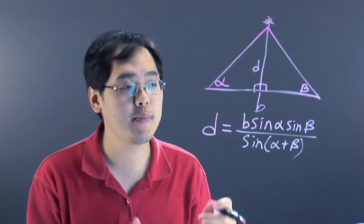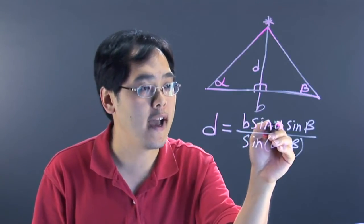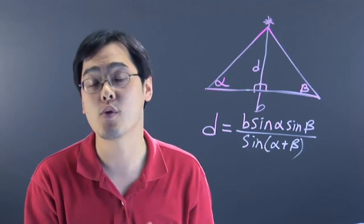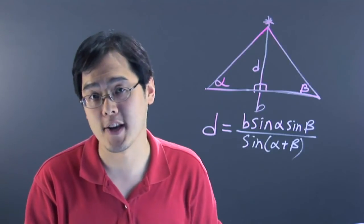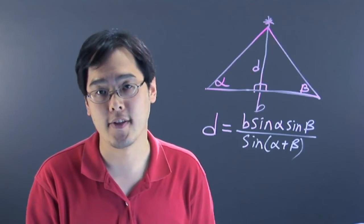Now, what you want to be careful about is you want to be consistent in determining if alpha and beta are in both degrees or both in radians, because you cannot mix and match, otherwise you'll get the wrong kind of value that you're looking for.